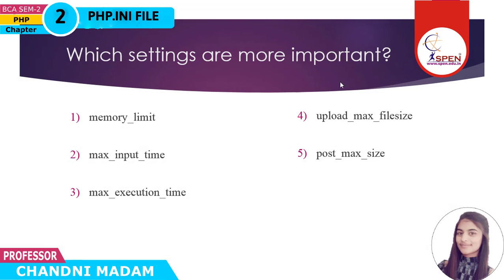Here are the most important settings in the PHP INI file. First is memory limit — the maximum amount of memory a script may consume, measured in megabytes. Next is max input time — the maximum amount of time each script can wait for requested data, measured in seconds.